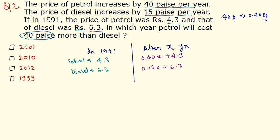We have to find out how many years will pass after 1991 when petrol will cost 40 paise more than diesel. The price of petrol is 40 paise more than the price of diesel after X years, so if we subtract the price of diesel from the price of petrol we would get 40 paise.